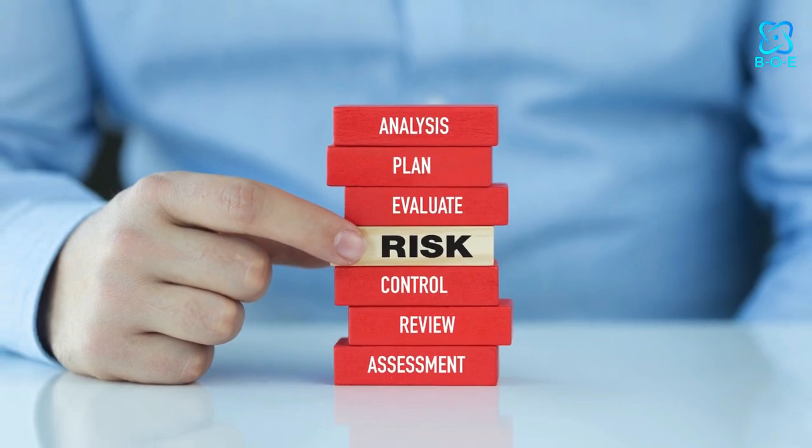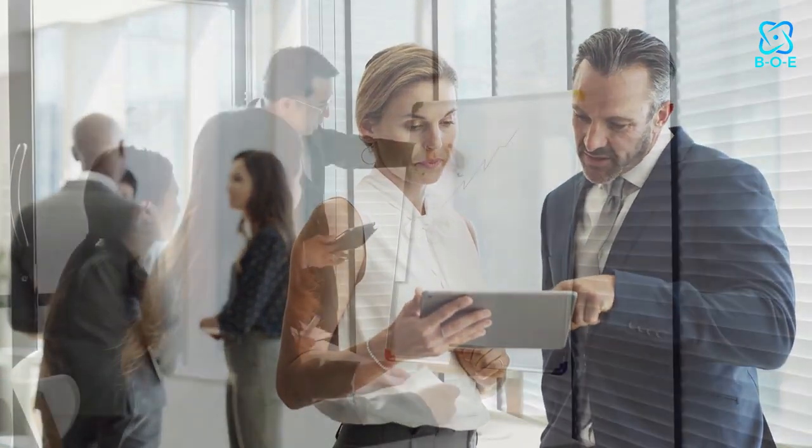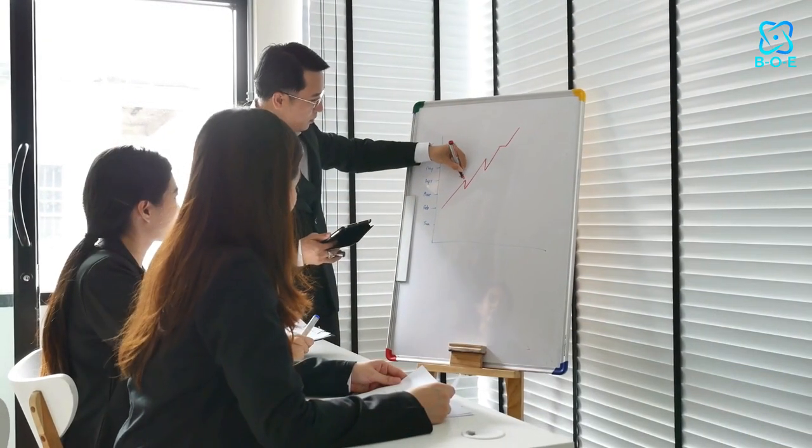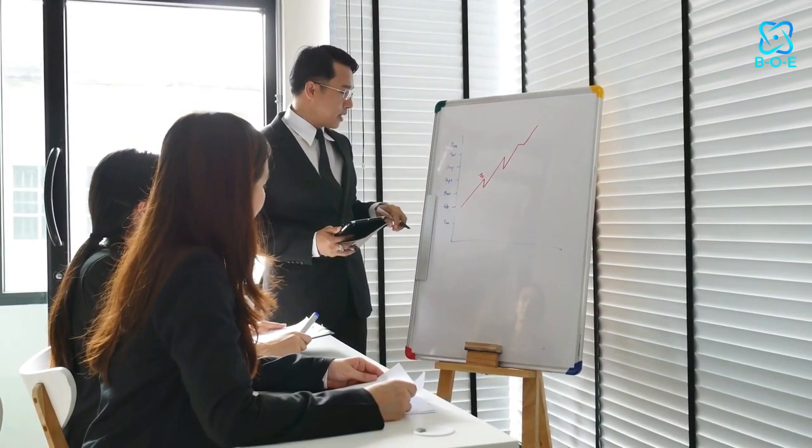Key components of risk management. 1. Risk identification. This involves identifying potential risks that could affect the achievement of objectives. Risks can stem from various sources, including financial uncertainty, legal liabilities, strategic errors, and more.